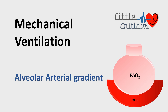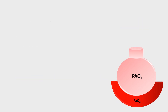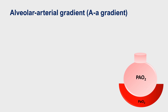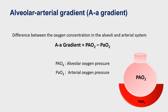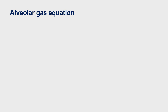In this video we will discuss the alveolar-arterial gradient. The alveolar-arterial gradient is the difference between the oxygen concentration in the alveoli and the arterial system. It is denoted by PAO2 minus PaO2. The alveolar-arterial gradient helps us to narrow down the differential diagnosis for hypoxia. While the partial pressure of arterial oxygen can be easily determined from arterial blood gas analysis, the partial pressure of alveolar oxygen is determined from the following equation.